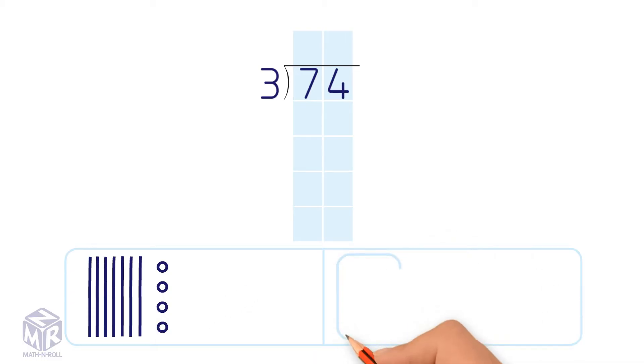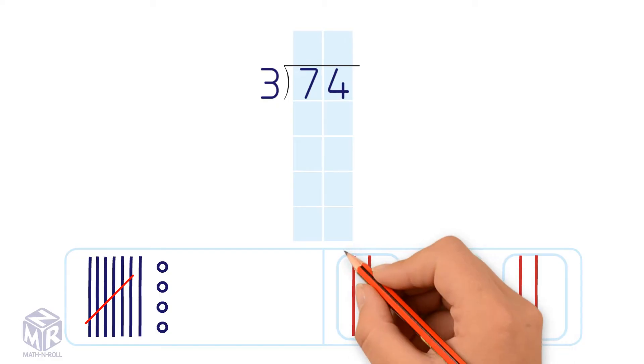Draw 3 boxes to represent equal groups. Share the 7 tens equally among the 3 groups. Cross out the tens that you use. There are 2 tens in each group.